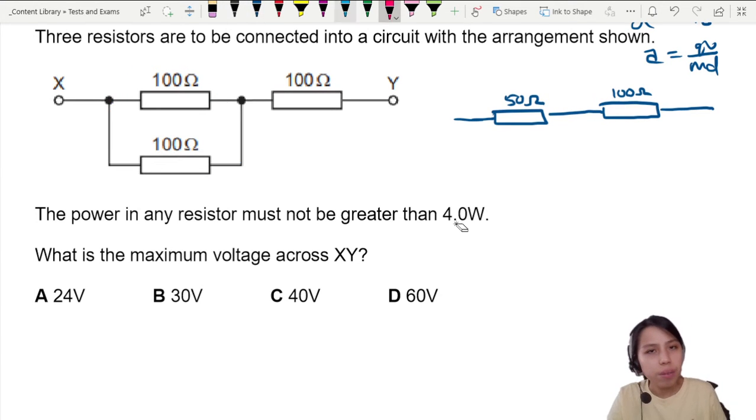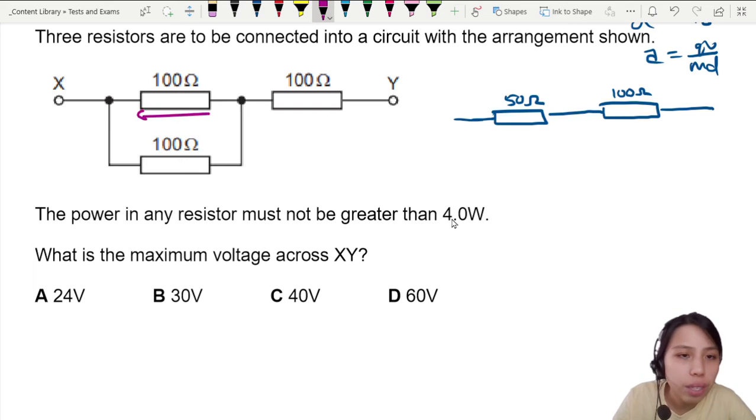You know why I combine together? Because the potential difference across this one and across this one is the same. So it doesn't matter.